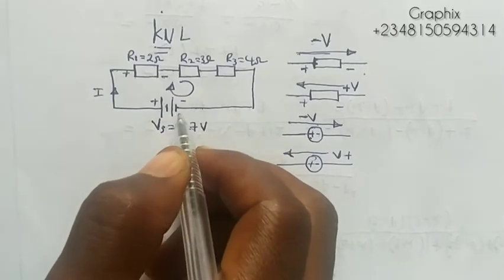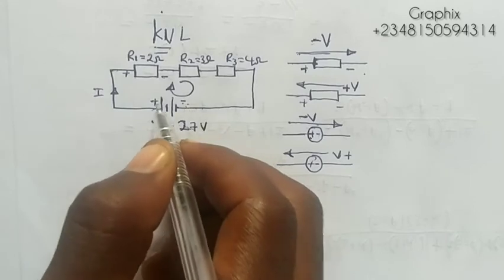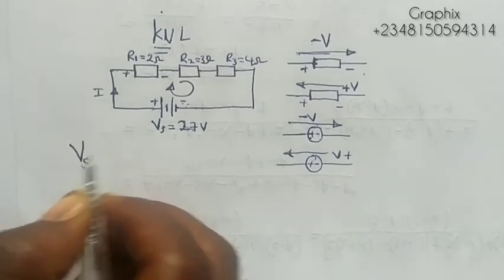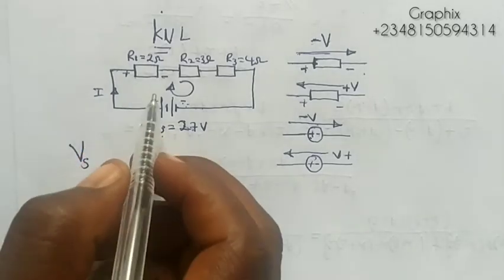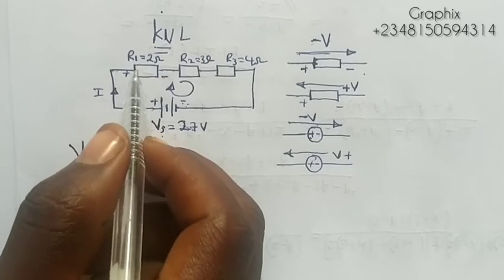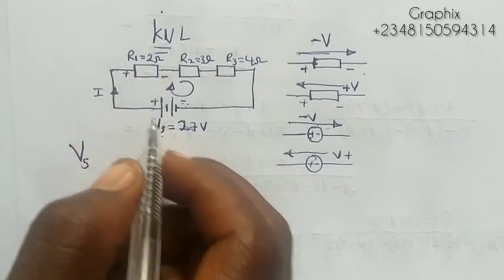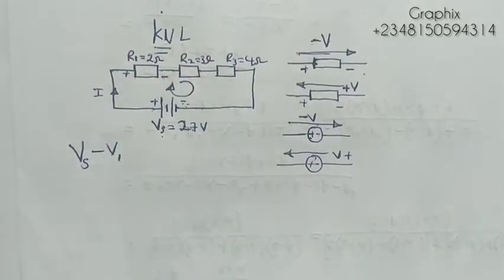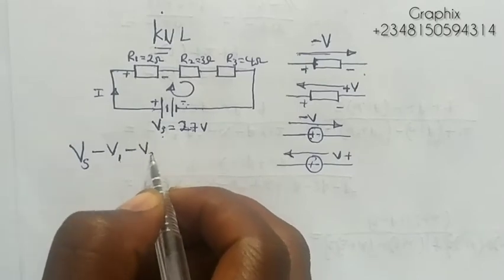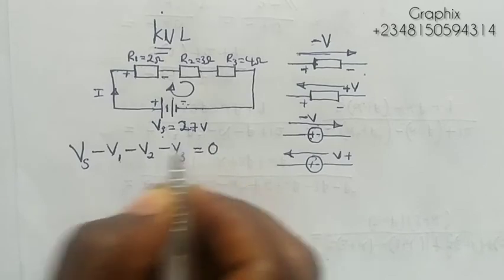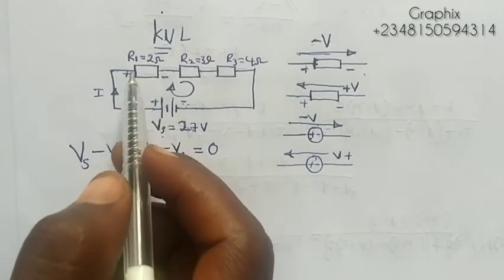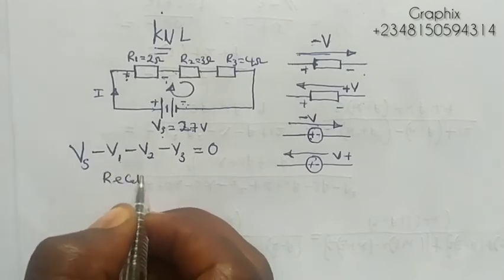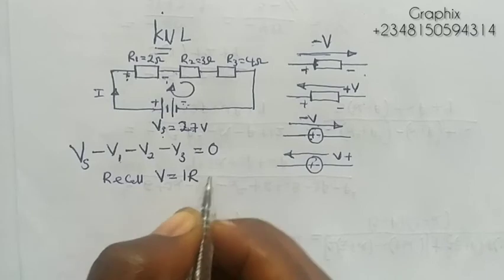Applying Kirchhoff's Voltage Law, if I move in a clockwise manner, I start moving from a negative to a positive terminal — from lower to higher potential — so the voltage supply Vs (which is Vx) is positive. Then moving through the resistors, current passing through each resistor gives a voltage drop, so it will be minus V1, minus V2, minus V3, all equals zero.